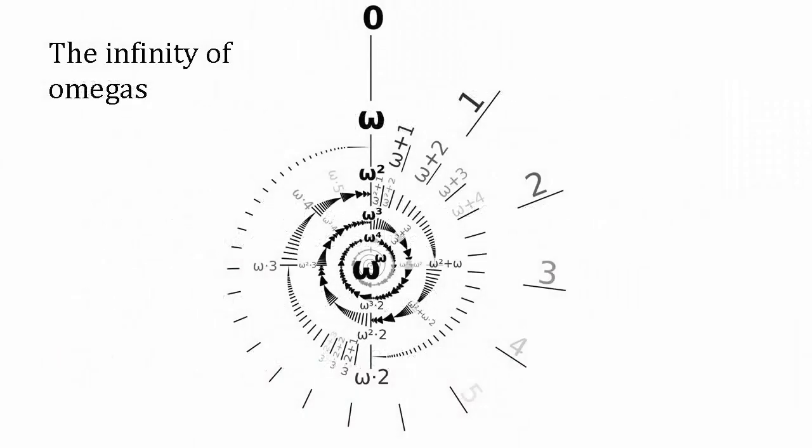Aleph null and omega both refer to the same set, the set of natural numbers. Aleph null is its size, how many elements it contains, and omega is its shortest length. This length can be increased by taking elements out of their usual order and placing them at the end.